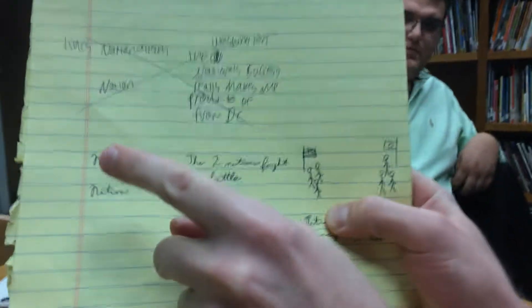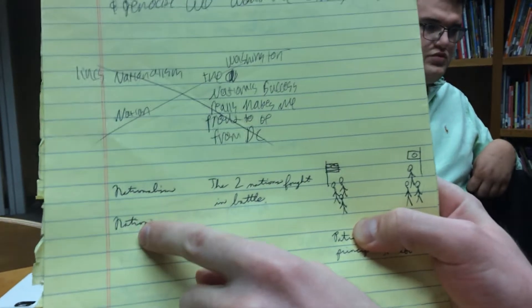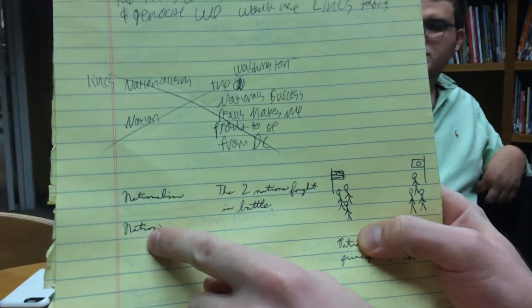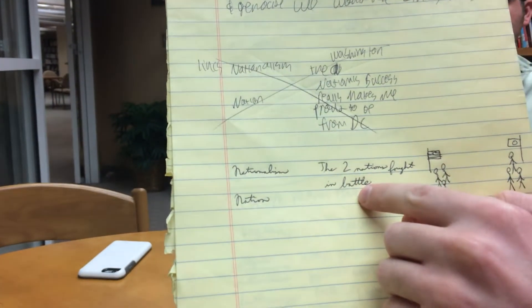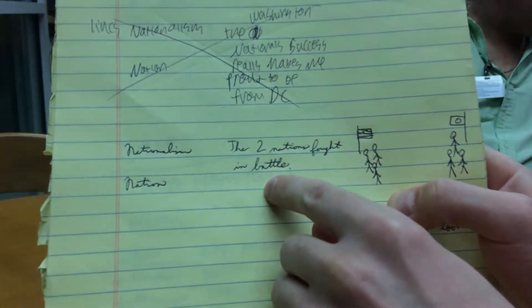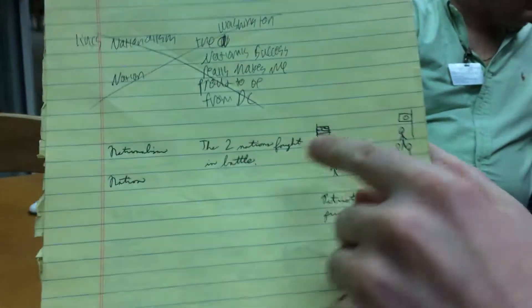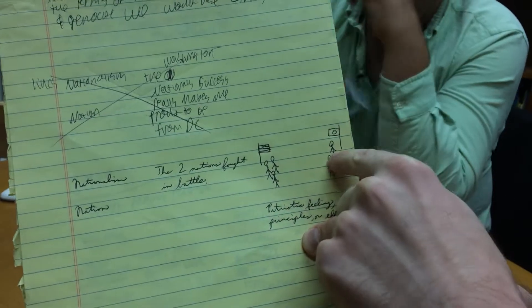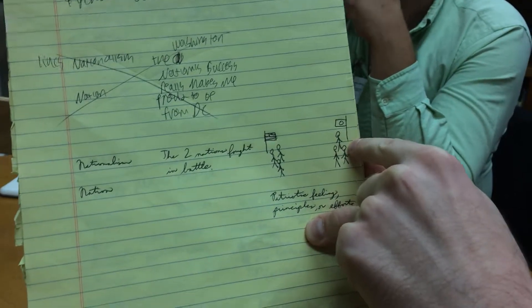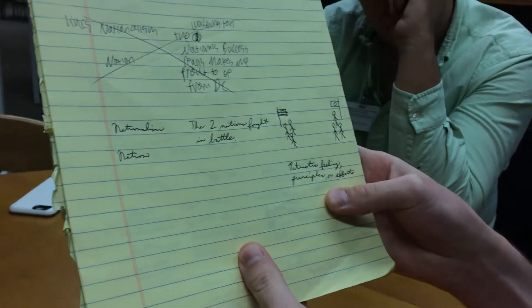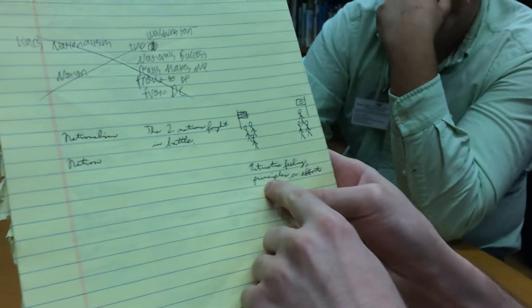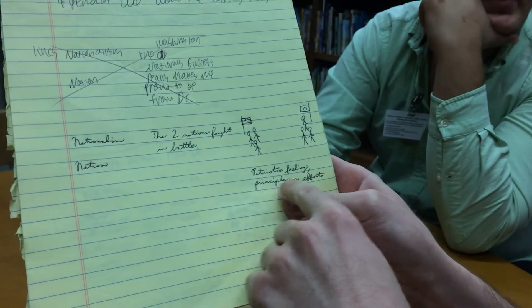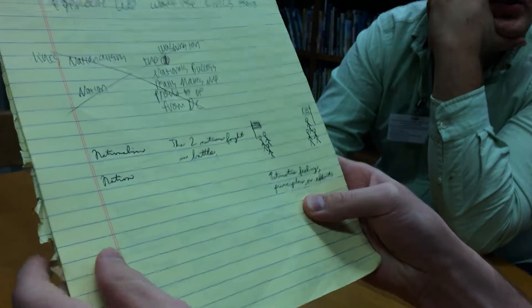We have an example of a links table right here. We have the word nationalism, shortened to mean 'nation,' which is a word students can already understand. A sample sentence would be: 'The two nations fought in battle.' And here you have a picture of soldiers with an American flag versus soldiers with a Japanese flag. For synonyms, there's patriotic feeling, principles, or effort.